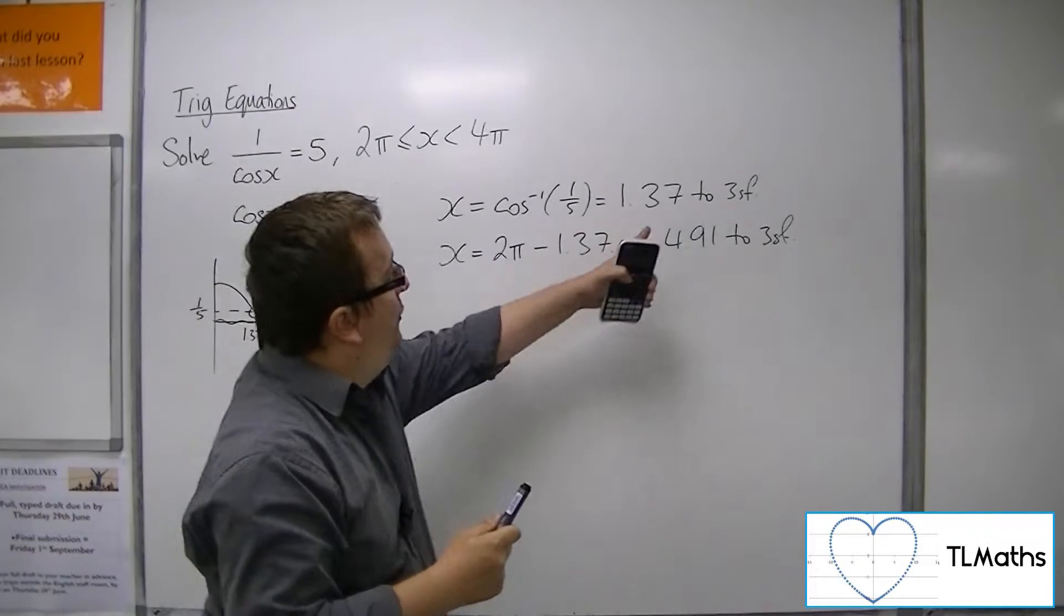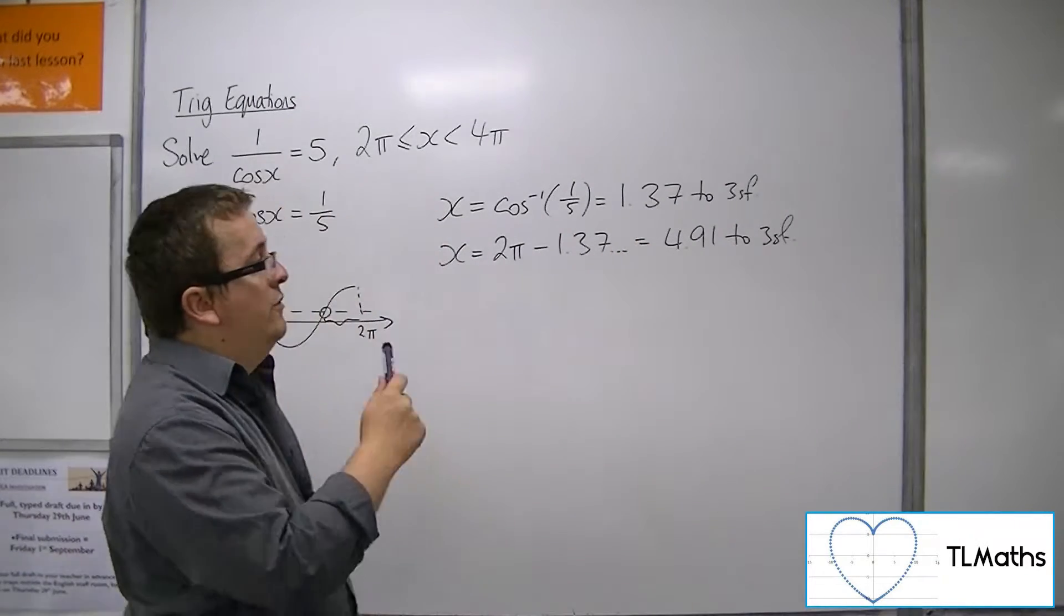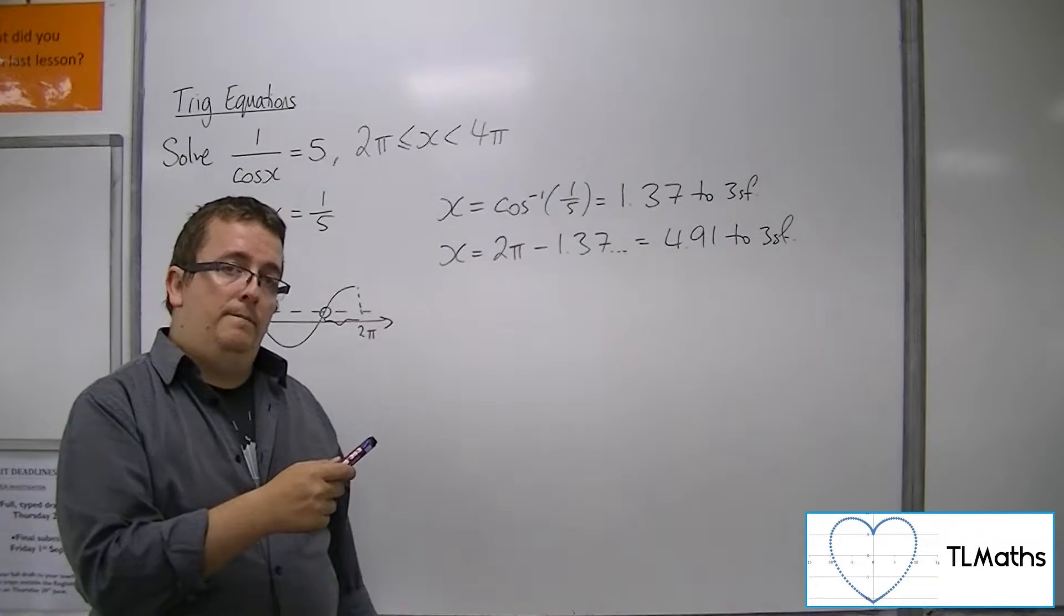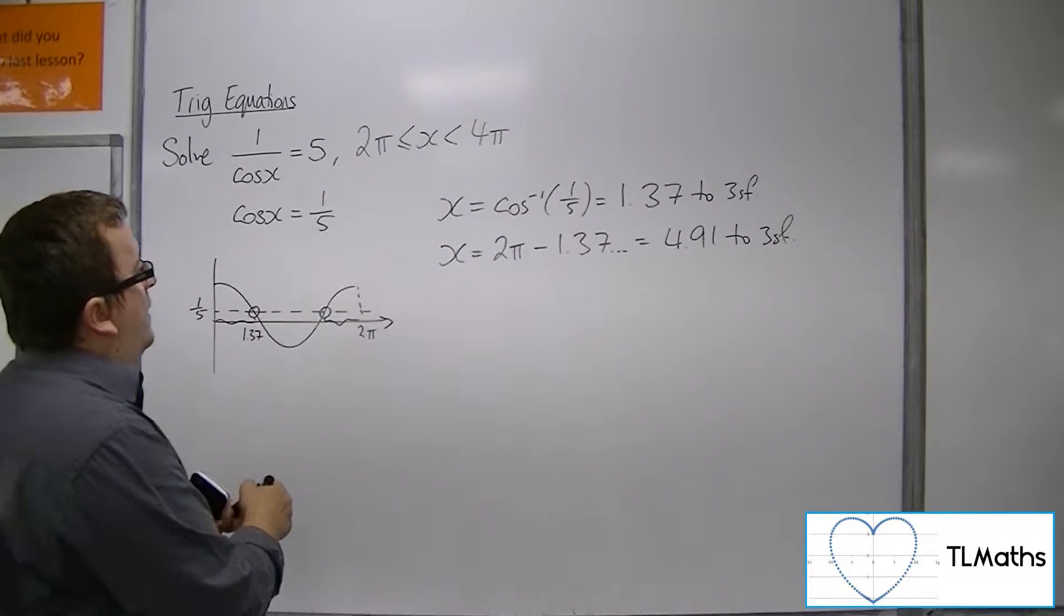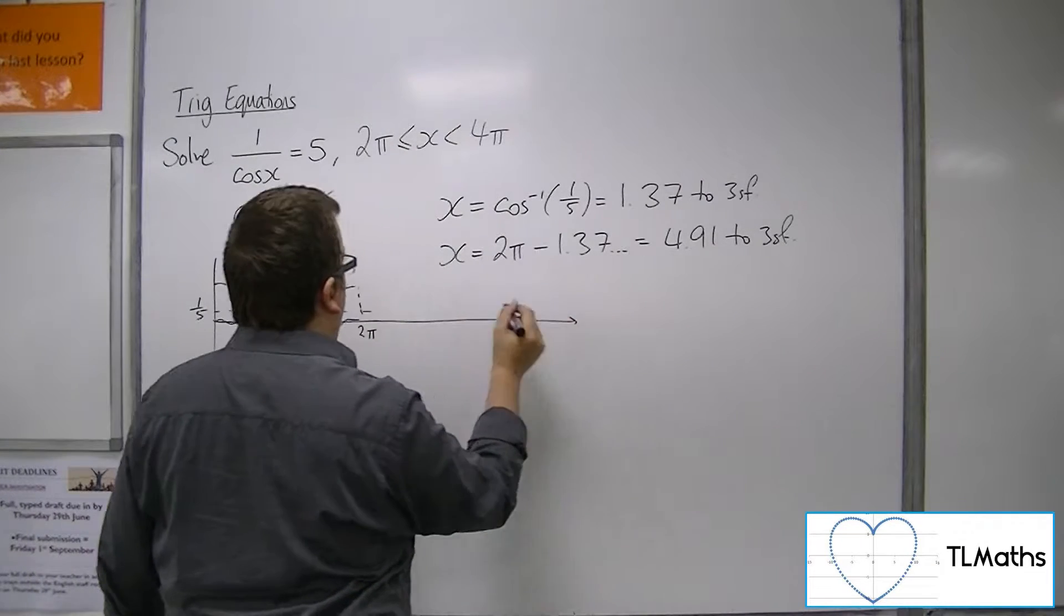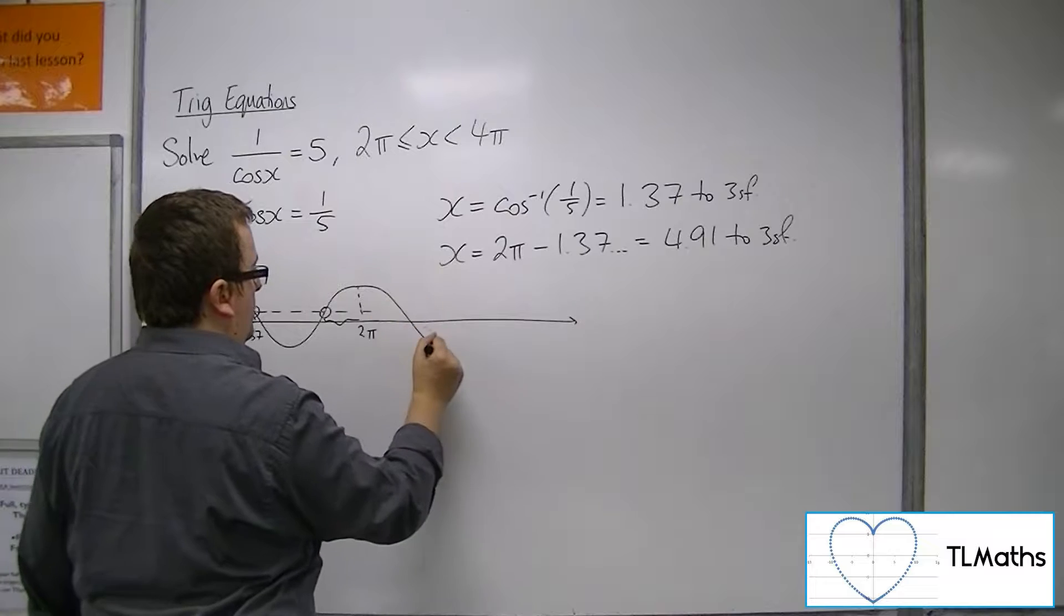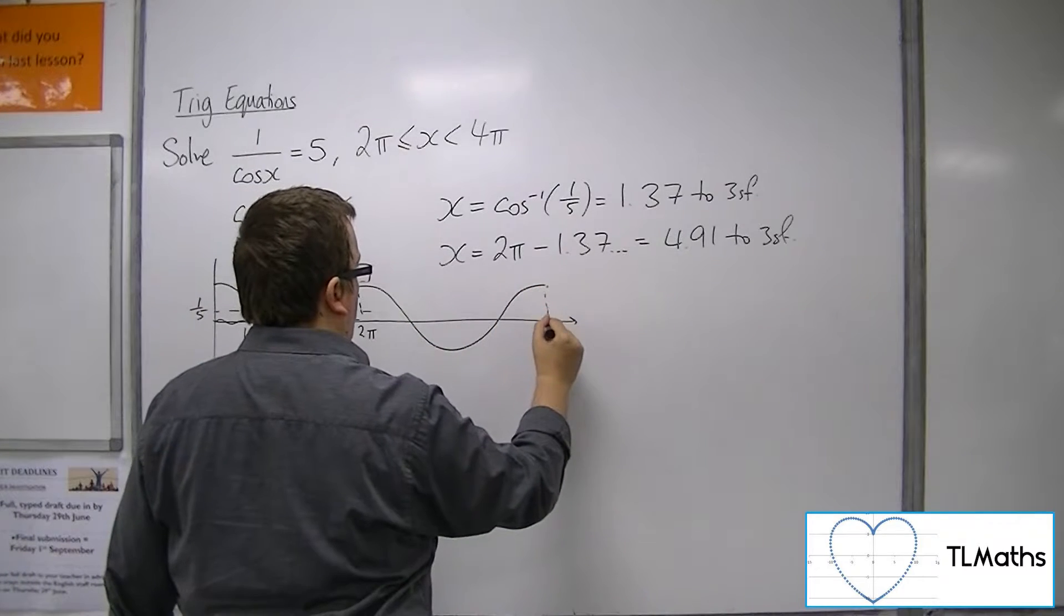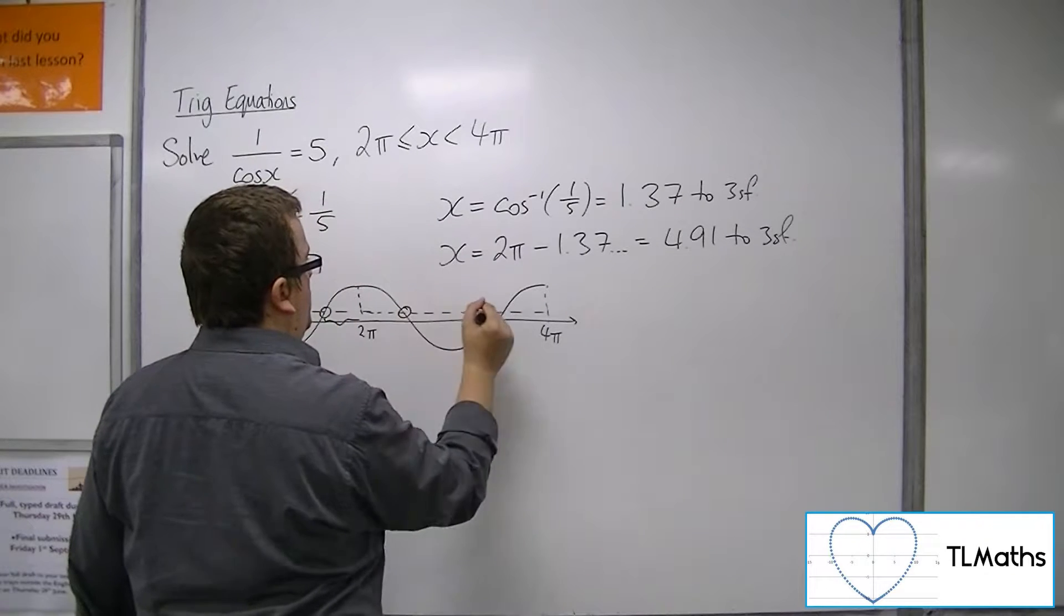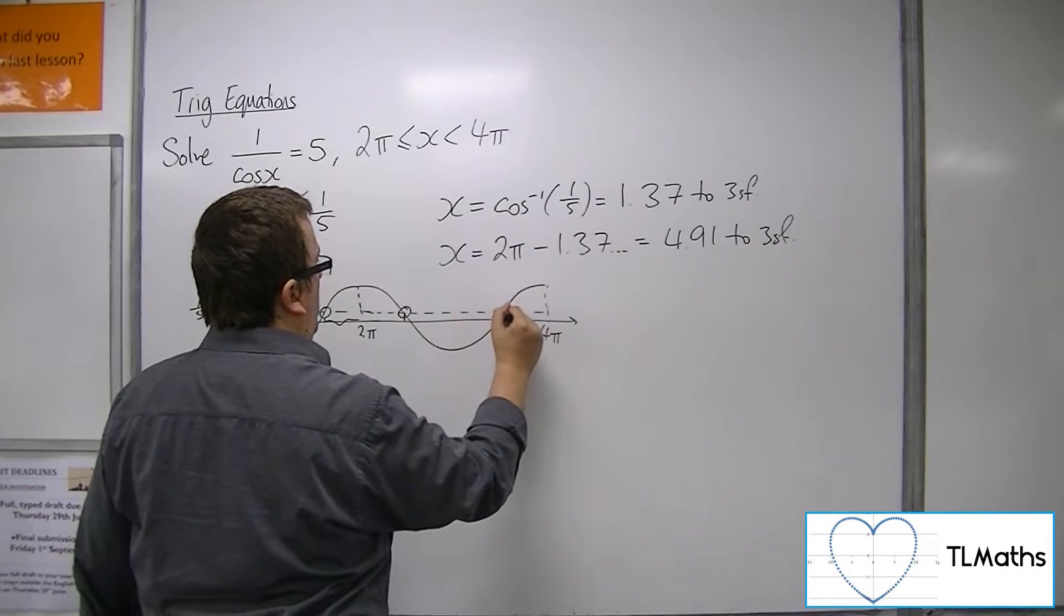But now these two solutions are not either of the ones that I want to find, because neither of them are between 2π and 4π. So the idea here is that if I continue that curve up to 4π, then the two solutions that I actually want are these two here.